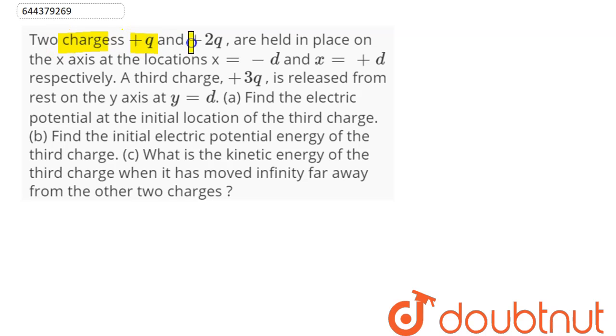Question is: two charges plus q and plus 2q are held in place on the x-axis at the location x equal to minus d and x equal to plus d respectively. A third charge plus 3q is released from rest on the y-axis at y equal to d.